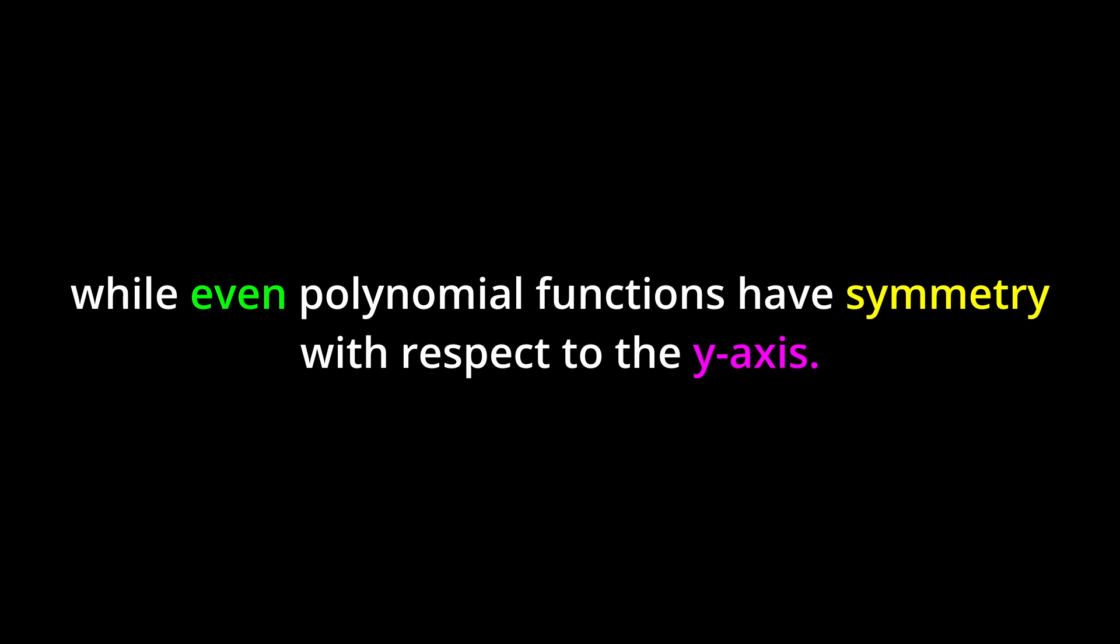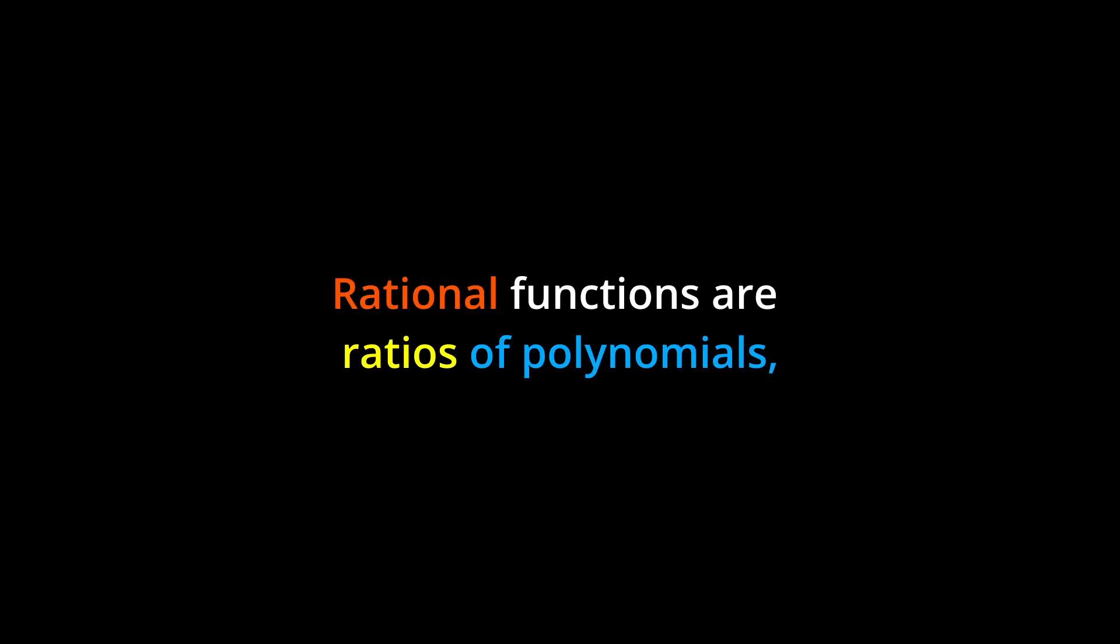While even polynomial functions have symmetry with respect to the y-axis. Rational functions are ratios of polynomials, and their graphs may have vertical asymptotes and holes.